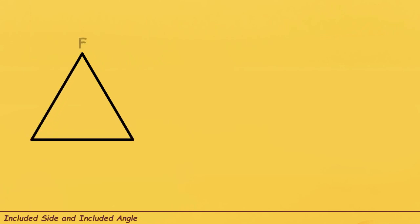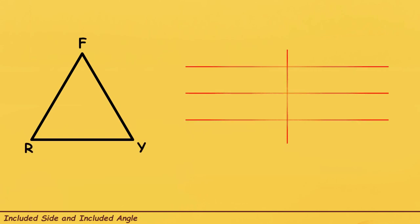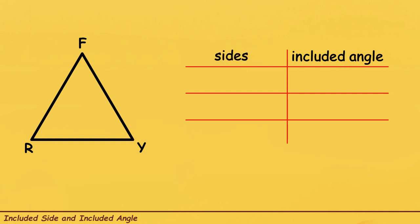Suppose we have this given triangle, and this triangle is Triangle FRY. Let us try to find the Included Angle first. Sa pagkuha ng Included Angle, ang magiging given dyan ay dalawang sides of the triangle.